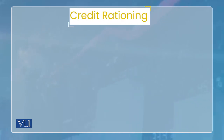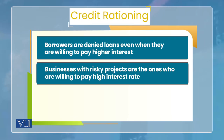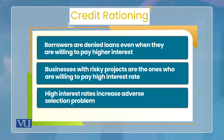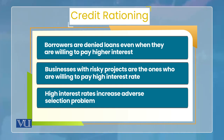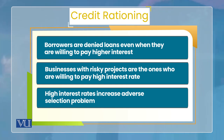Ab, jo hum credit channel padh rahe hain — jis mein bank lending channel bhi discuss kar chuke hain, aur abhi balance sheet channel discuss kiya — usse ke andar further ek type hai: cash flow channel. Toh pehle yeh samajh lete hain ki cash flow kya hota hai. Jo bhi firms ke accounts hote hain, unm money receipts hoti hain yaani money inflow ho raha hota hai, jabke money ki payments bhi ho rahi hoti hain yaani money outflow bhi ho raha hota hai. Yeh jo inflow aur outflow kisi firm ke accounts mein hote hain — inhe kehte hain uske cash flows.